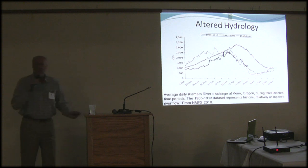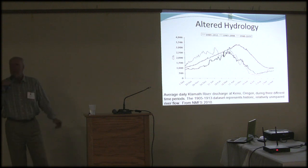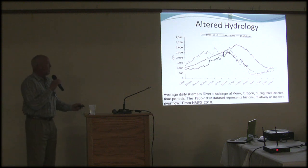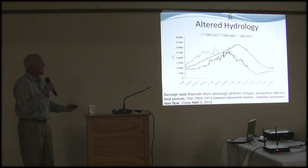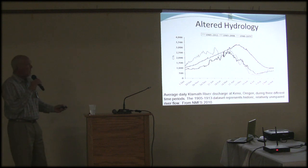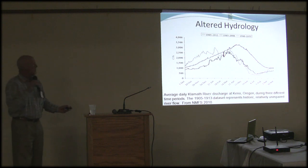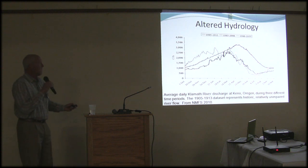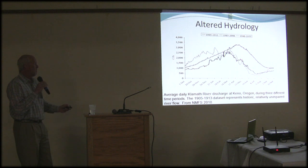Altered hydrology is also affecting the main stem Klamath. Whereas historically the peak of the hydrology occurred in mid-May, we've seen a shift over time moving it up closer to early April. This has had a significant effect on habitat suitability and availability during smolt out-migration and juvenile rearing through the spring months.